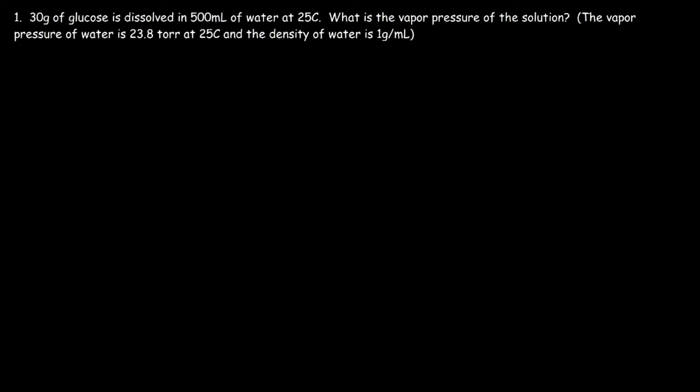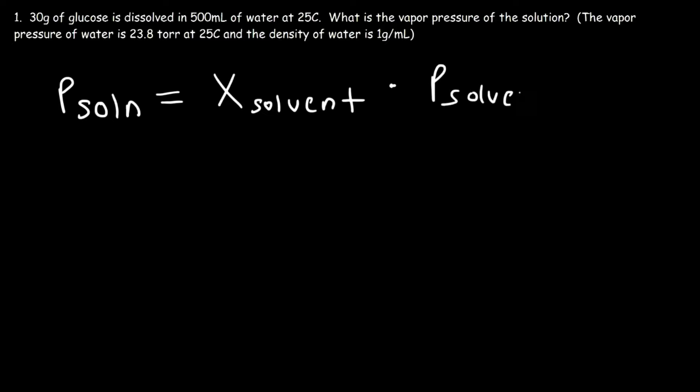In this video we're going to talk about how to use Raoult's law in order to calculate the vapor pressure of a solution. Here is the equation associated with Raoult's law: the vapor pressure of the solution is the product of the mole fraction of the solvent multiplied by the vapor pressure of the solvent. Raoult's law states that if you add a non-volatile solute to a solvent, the vapor pressure of the solution will be less than the vapor pressure of the pure solvent. For example, if you add salt to water, the vapor pressure of the salt water solution will be less than the vapor pressure of pure water.